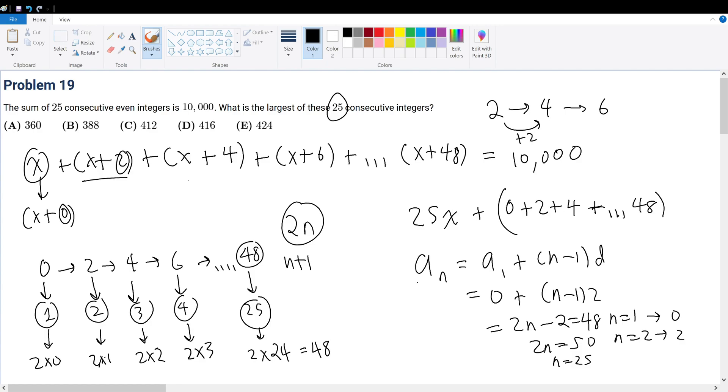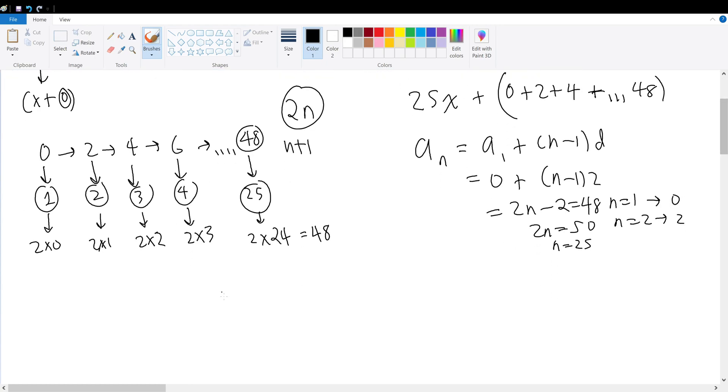So that means the sum of this entire thing, the summation formula is equal to the first term plus the nth term times the number of terms divided by 2. In this case, the first term is 0 plus 48 times the number of terms, which is 25, divided by 2, would give us 24 times 25.